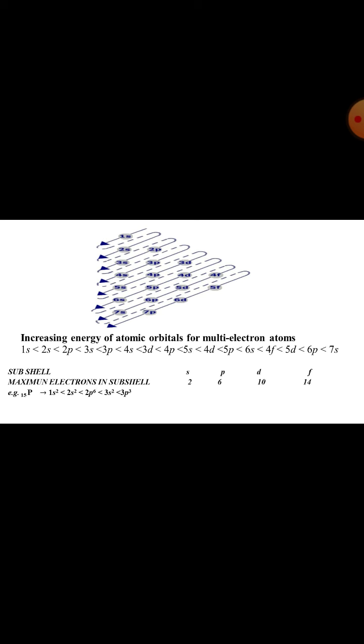Just start from the 1s. You move just like a snake in spiral sequence. Those that come first in your way, you have to fill first. This gives a sequence of increasing atomic orbital for multi-electron atoms. 1s2, 2s2, 2p6, 3s2, 3p6, like that.